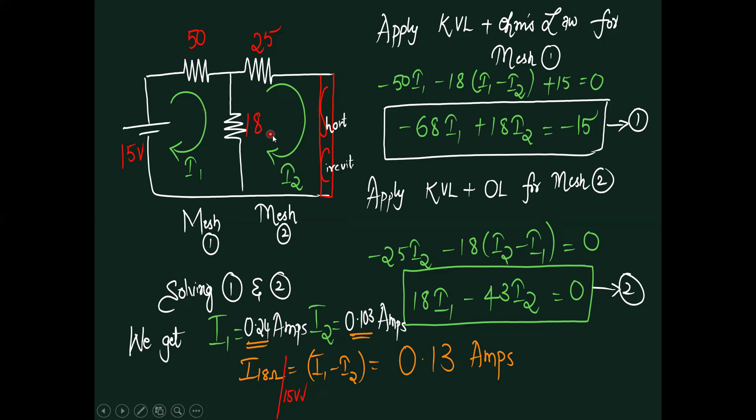Same thing, two meshes, I1 current, I2 current. Across each resistor we observe there is a drop. Apply KVL in combination with Ohm's law for mesh number one: minus 50 I1 minus 18 into I1 minus I2 plus 15 equals zero. First mesh equation, followed by second mesh equation in combination with Ohm's law: minus 25 I2 minus 18 into I2 minus I1 with reference to second mesh. This is the second mesh equation.